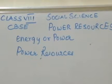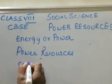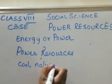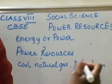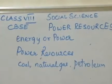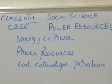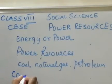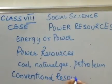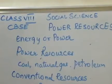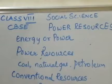Some examples of power resources are coal, natural gas, and petroleum — these are all called fossil fuels and are non-renewable resources; they cannot be renewed. Power resources can be categorized as conventional resources and non-conventional resources.